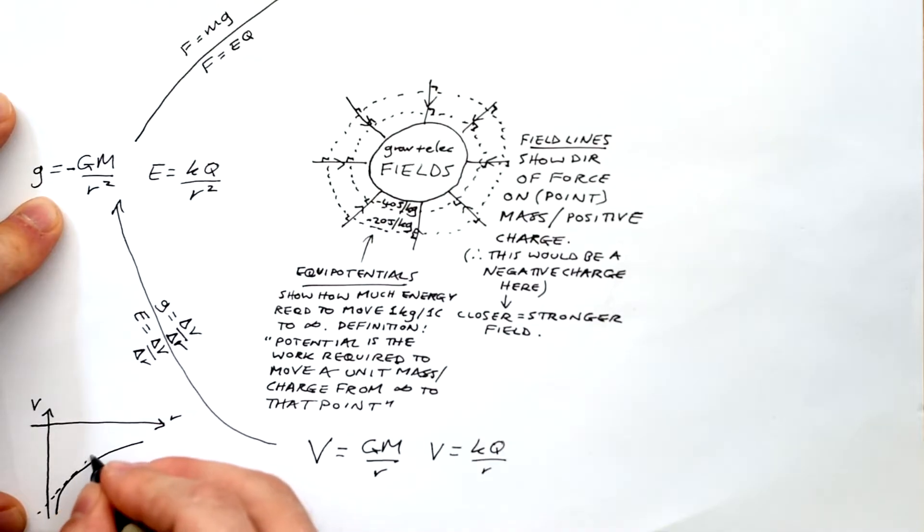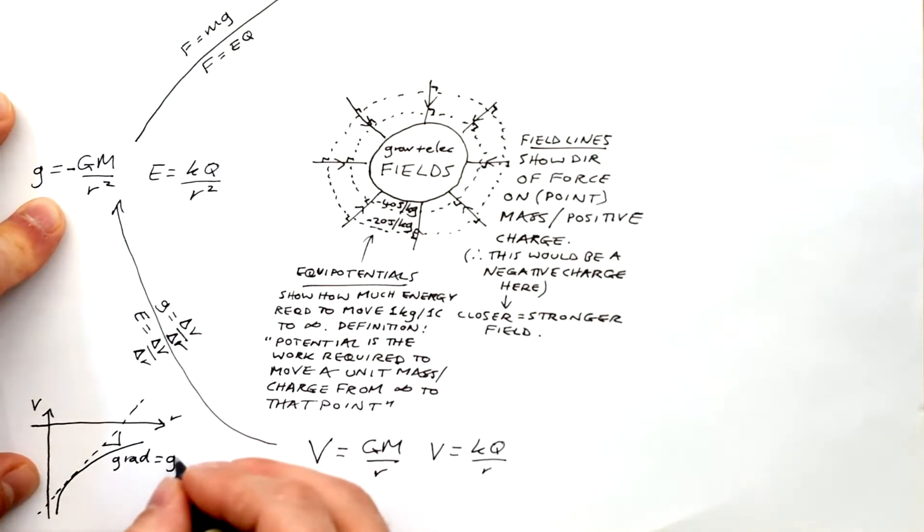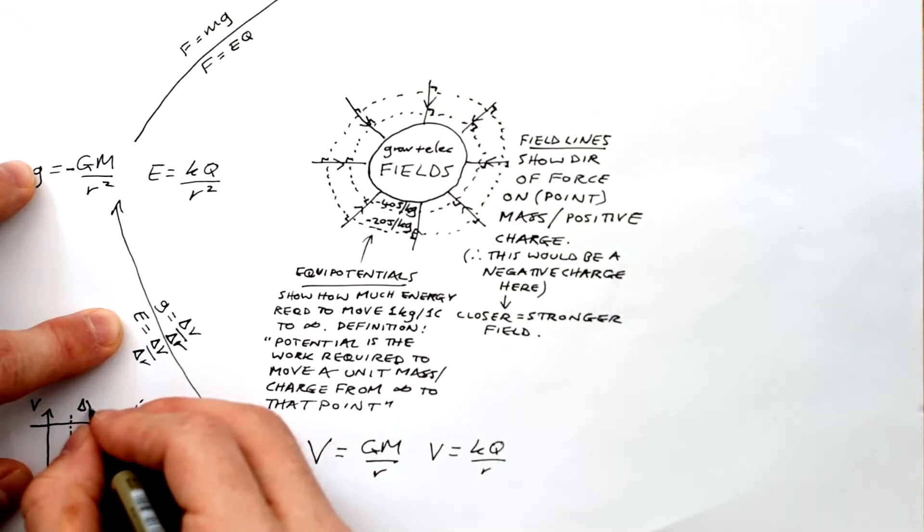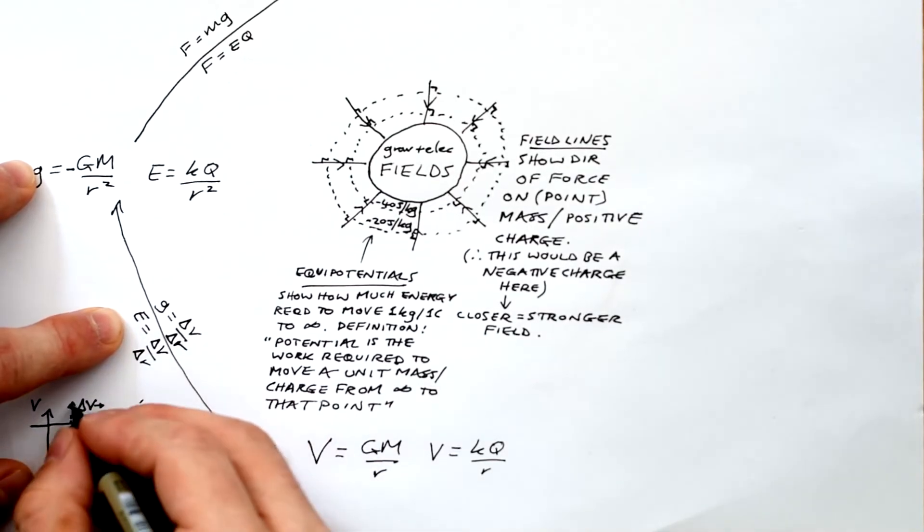Looking at a graph of potential against distance, we always have this y equals one over x curve, the magnitude of the gradient at any point is going to be equal to the field strength at that point. So that's why field strength has the alternative name potential gradient. And what else can we do?